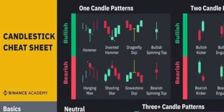On the hammer, the wick is at least two times the body. The inverted hammer's wick is supposed to be about three times the body. A dragonfly doji means it opened and closed at the same price but there was a very long wick on the sell side. A bullish spinning top means it opened and closed a little higher, but the price moved way up high and way down low — it's a sign of indecision. Exact opposite for the bearish side.